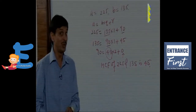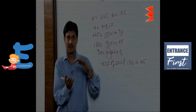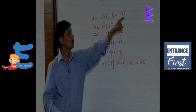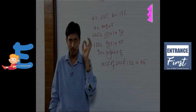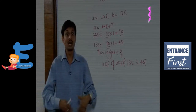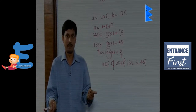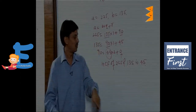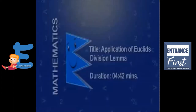For verification, when the HCF divides both numbers, their quotients must be co-prime numbers — that is, relatively prime. If the quotients share any common factor, that number is not the true HCF. In this case, 225 and 135 divided by 45 give co-prime quotients, confirming that 45 is correct.